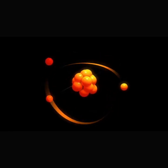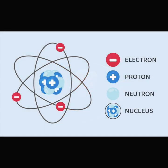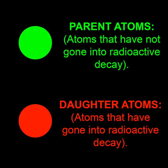First, let us define what are referred to as isotopes. These are two or more atoms that have the same number of protons and electrons, but not the same number of neutrons, that are both contained within the same chemical element. These atoms are divided into two categories: parent atoms, which are atoms that have not gone through radioactive decay, and daughter atoms, which are atoms that have entered into radioactive decay.